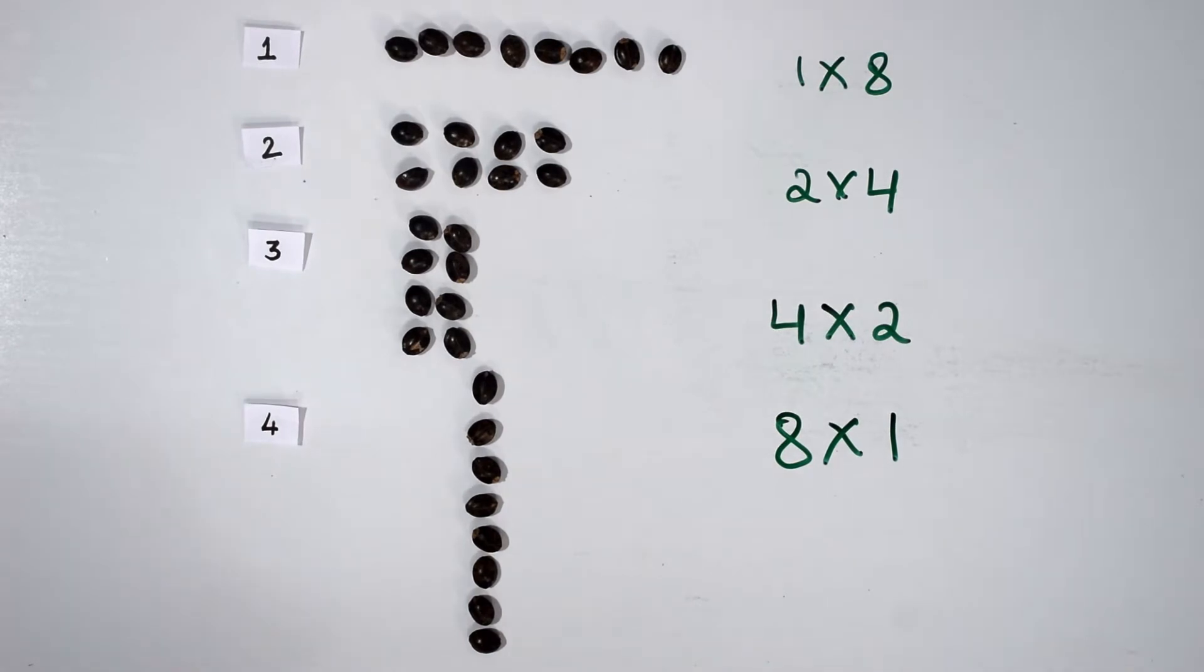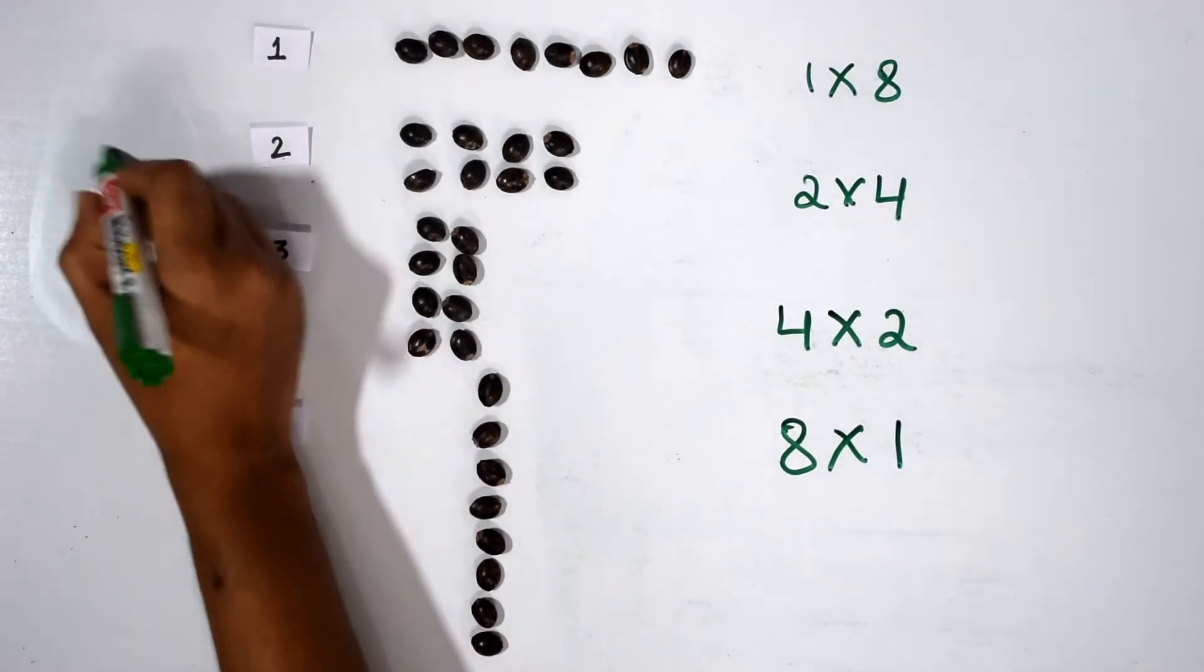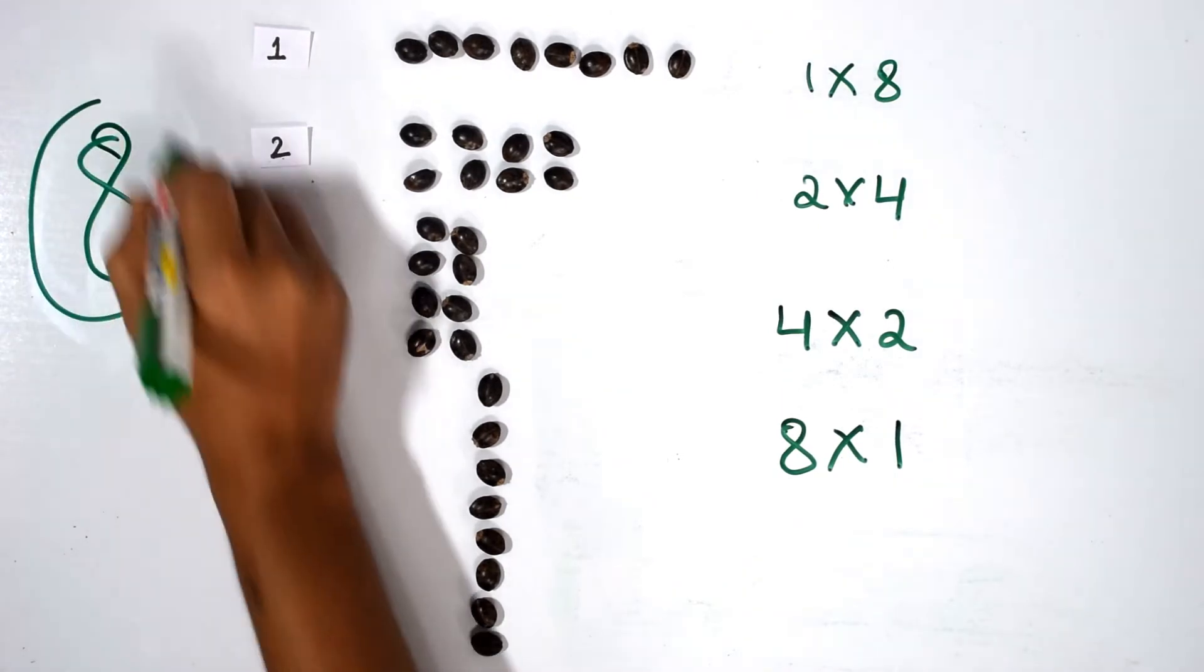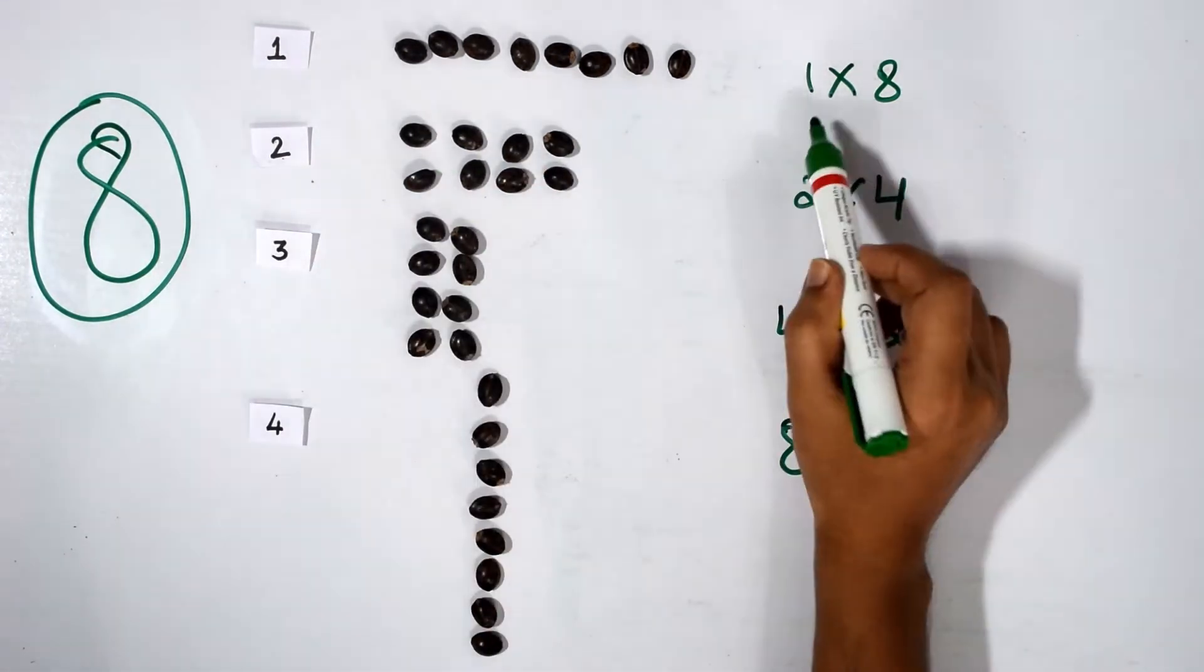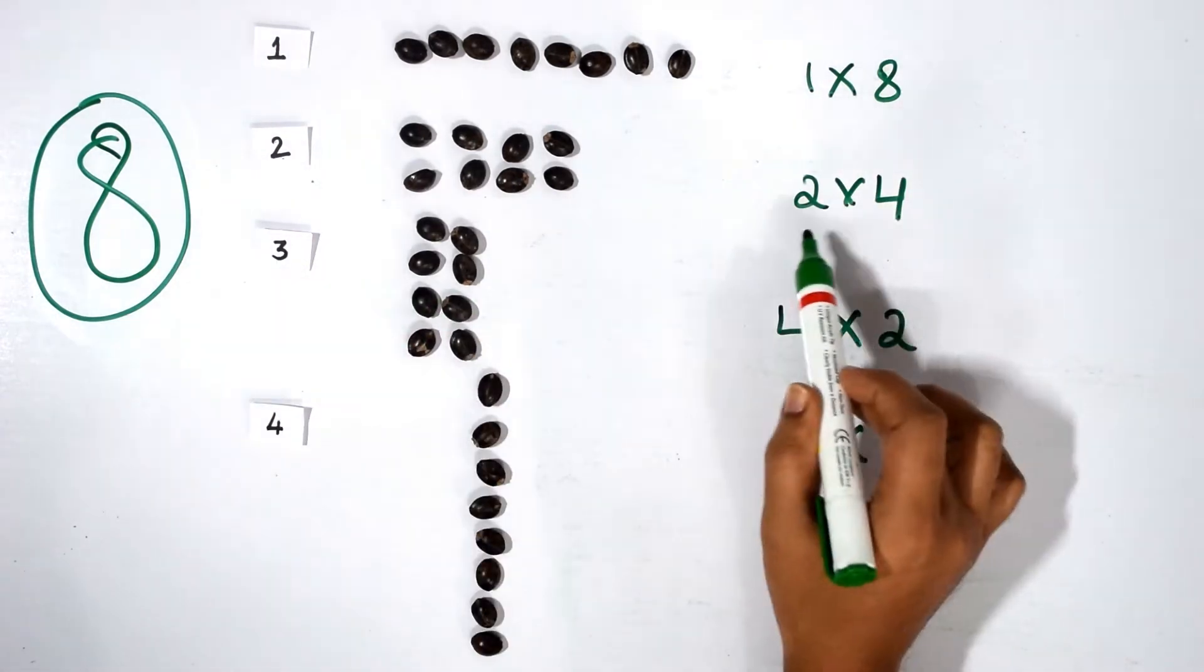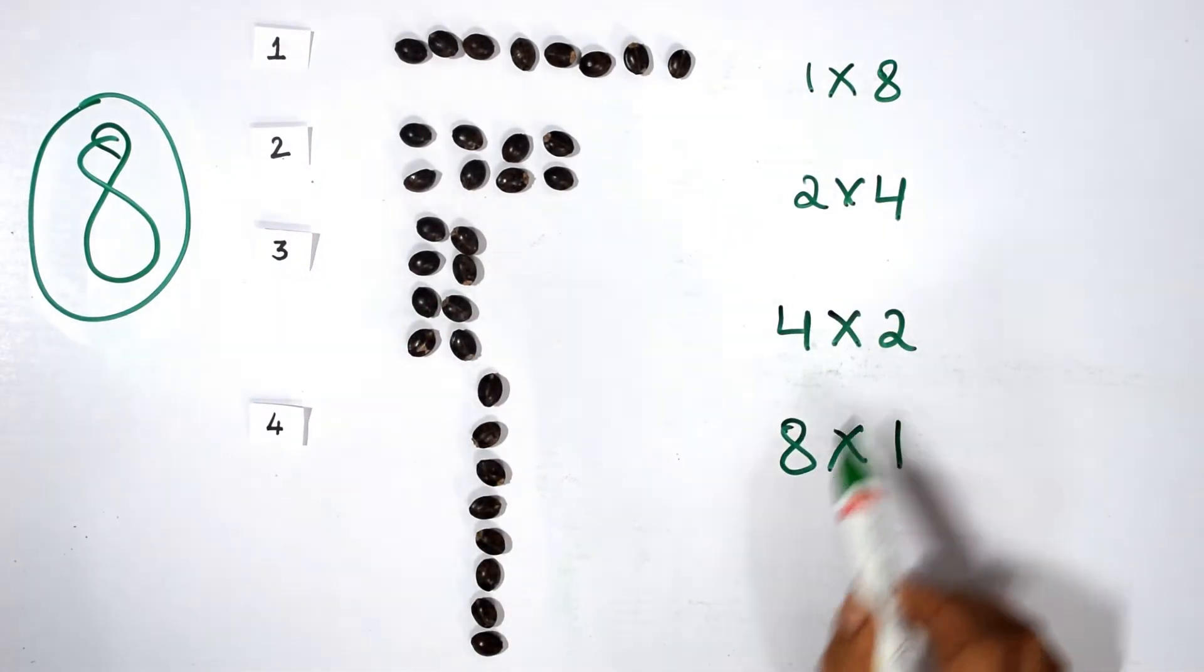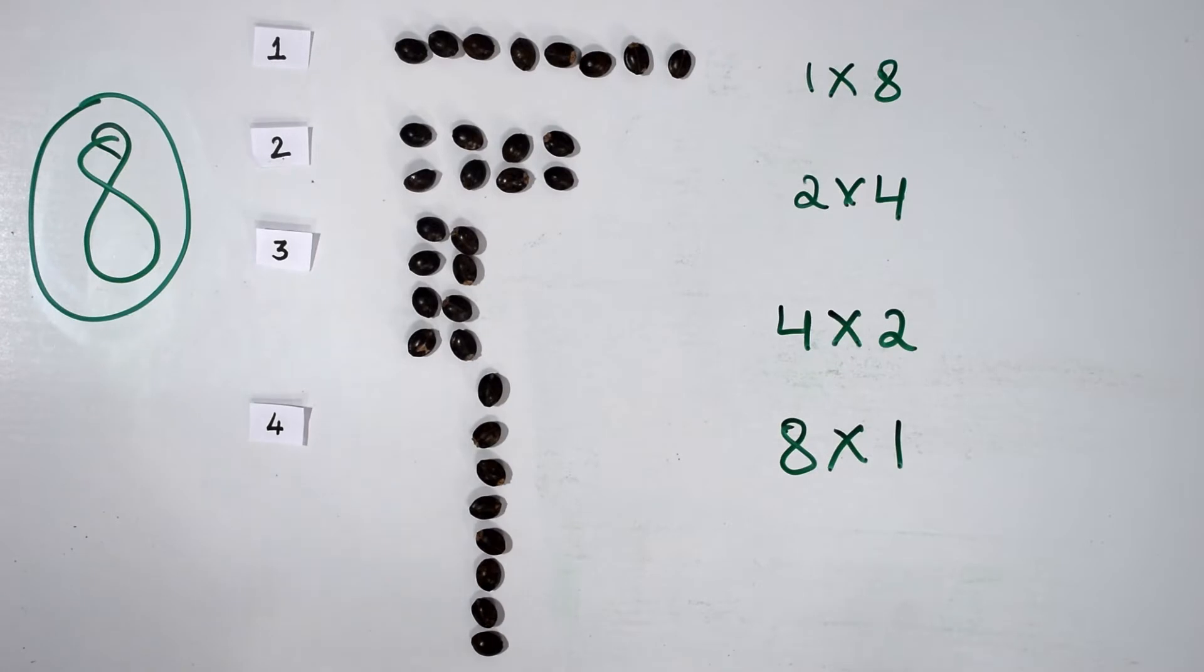Is there any other way of arranging eight seeds? No, these are the only four ways of arranging eight seeds. So eight can be written as a product of two numbers in four ways: it can be written as one times eight, two times four, four times two, and eight times one.